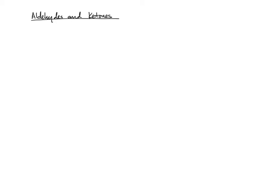First, let's recall that a carbonyl group can undergo addition. Let me put a general carbonyl-containing compound. If R1 or R2 equals H, then that is an aldehyde. If R1 and R2 are carbon, that is a ketone. So we're really focused on the carbonyl in this screencast, and depending on what these groups are, you either have an aldehyde or a ketone.